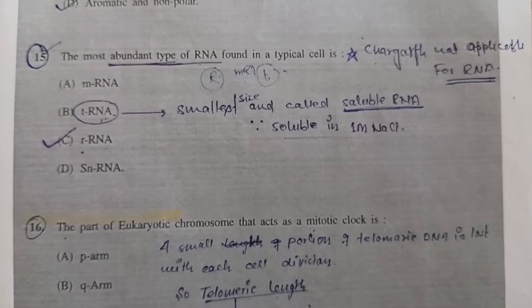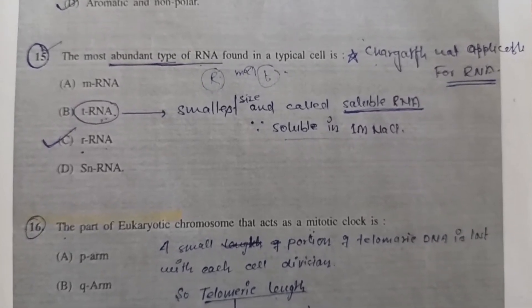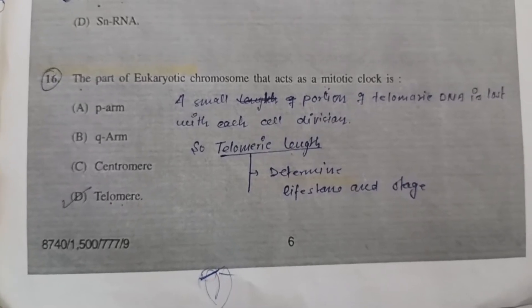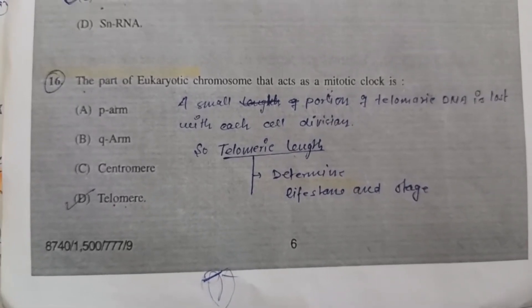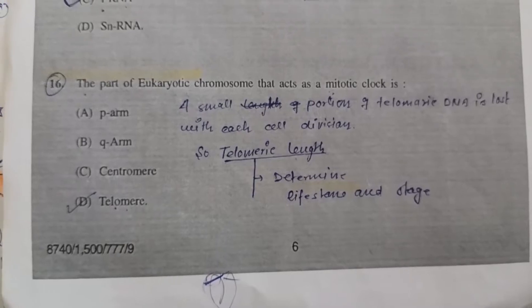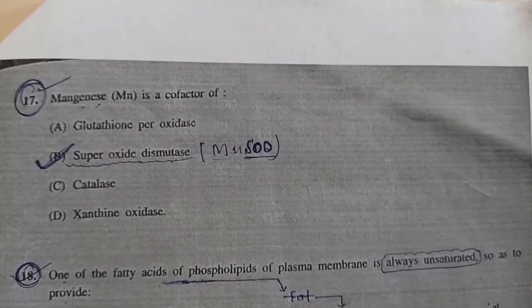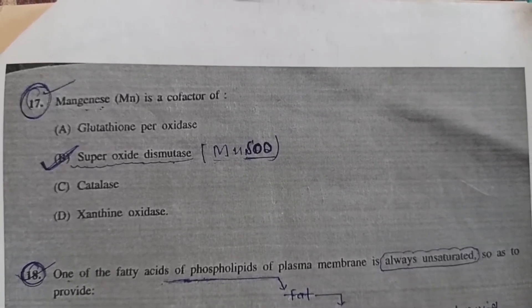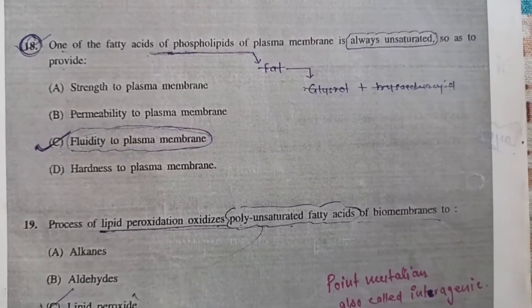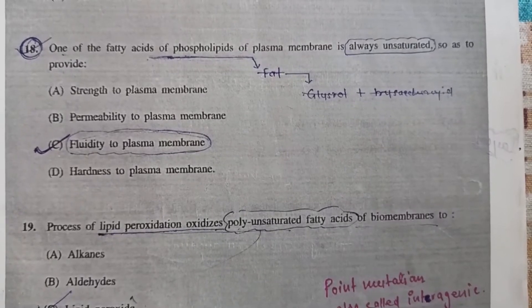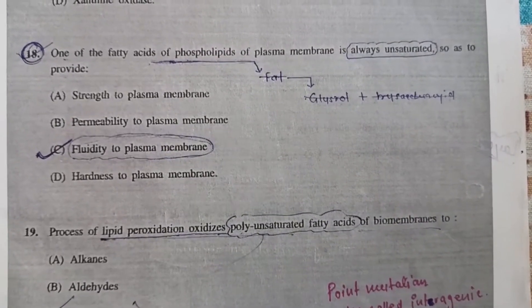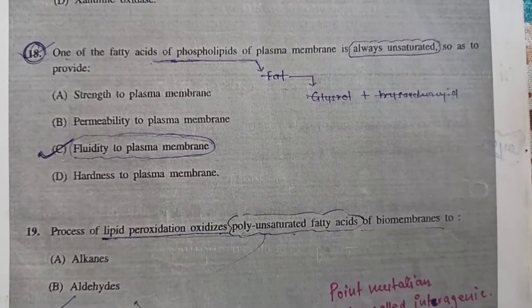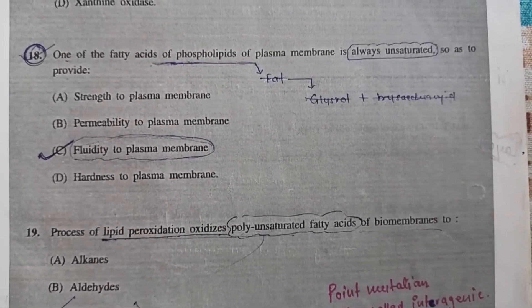Question 16: The part of eukaryotic chromosome that acts as mitotic clock is - Option D, telomerase. Question 17: Manganese is a cofactor of - Option B, superoxide dismutase. Question 18: One of the fatty acids of phospholipids of plasma membrane is always unsaturated so as to provide - Option C, fluidity to plasma membrane.